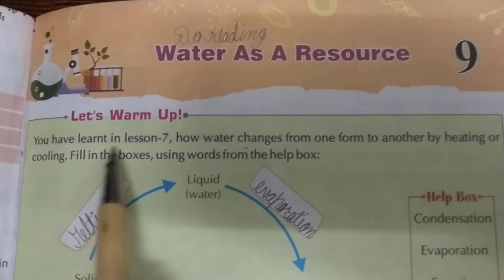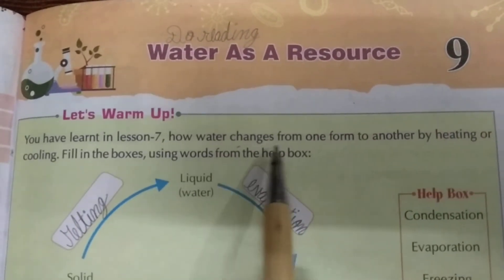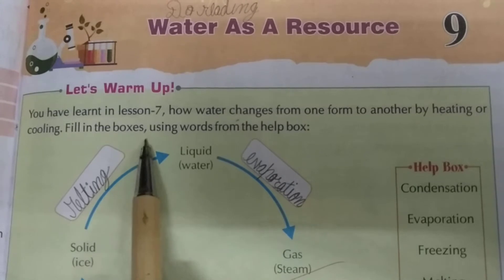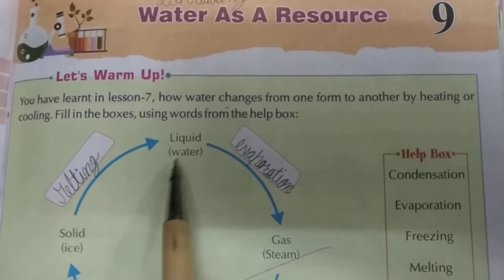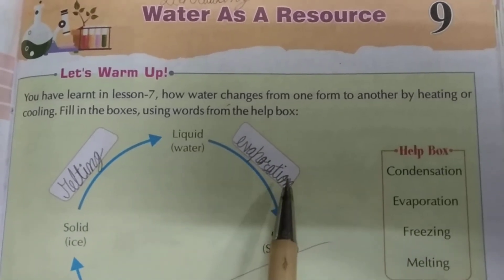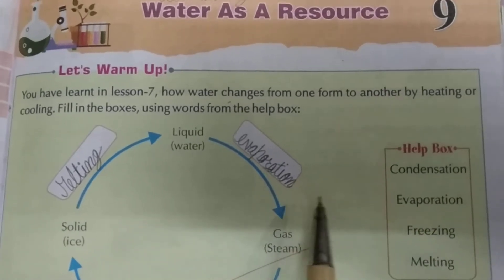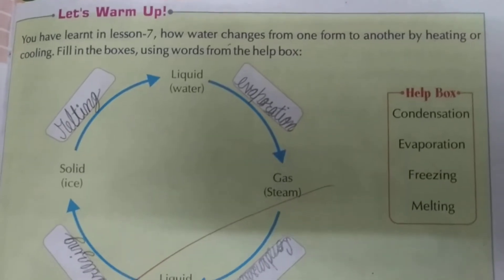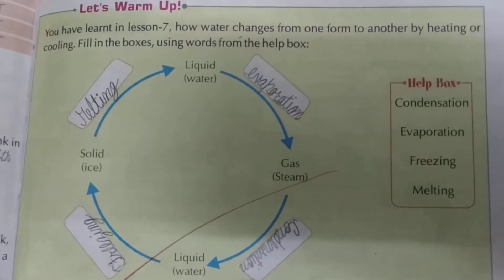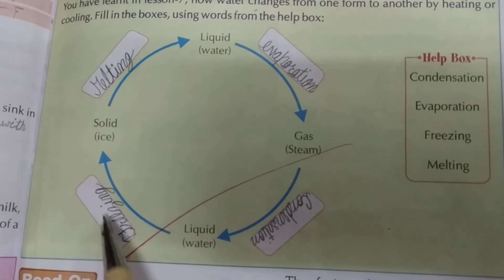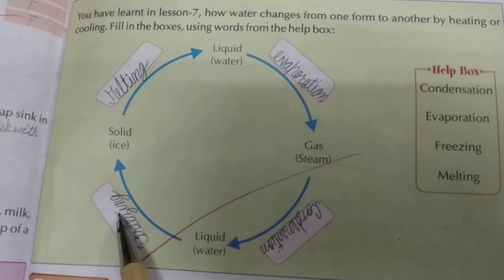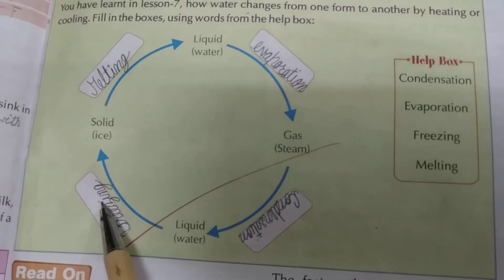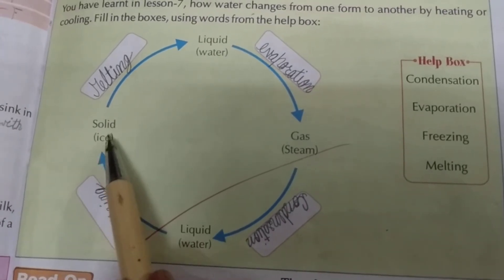Let's warm up. You have learnt in lesson 7 how water changes from one form to another by heating or cooling. Filling the boxes using words from the help box. Liquid water changes into water vapor by evaporation. Gas steam then changes into liquid water by condensation. When we keep water in the freezer, it becomes ice — that is freezing. Then it becomes solid ice.